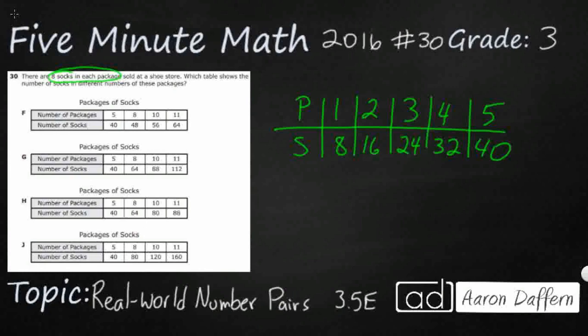So what is the relationship between packages and socks? This word each gives us a big clue. Each usually points us towards multiplication or division. Since this is like an input-output table, the rule is multiply by eight. We take our packages and multiply by eight to get our number of socks, because there were eight socks in each package.